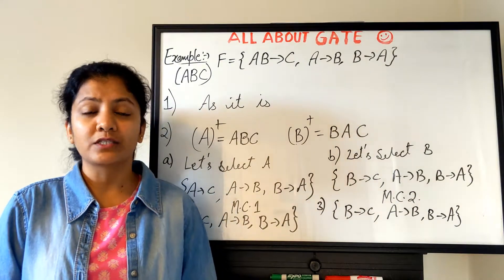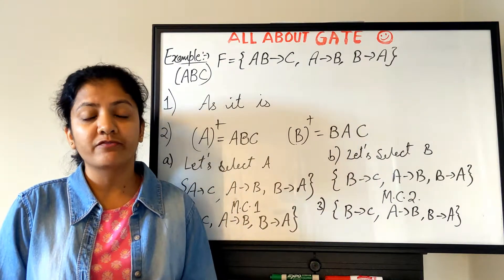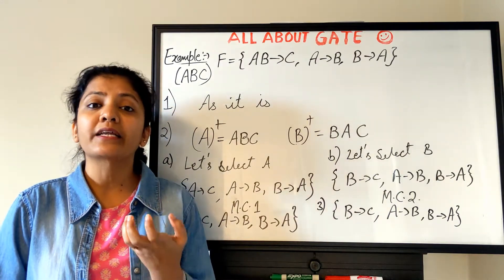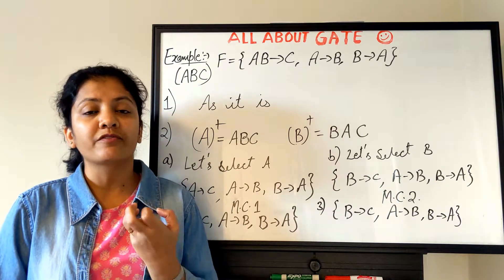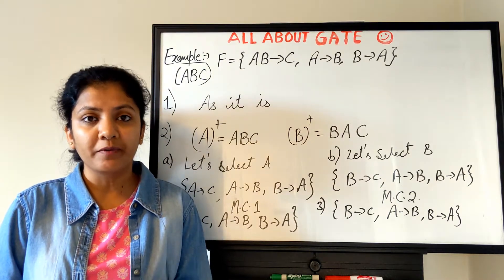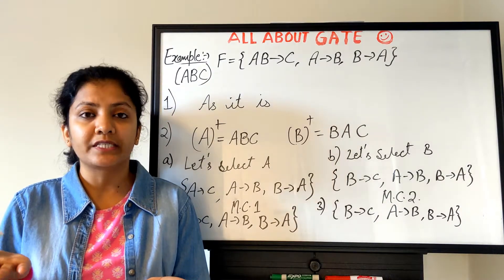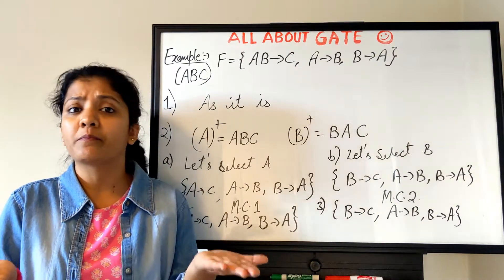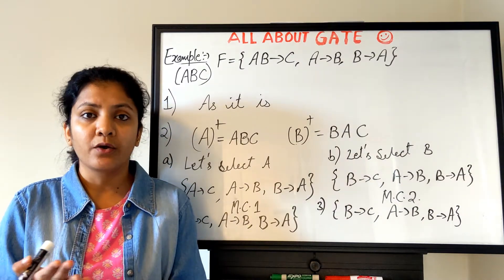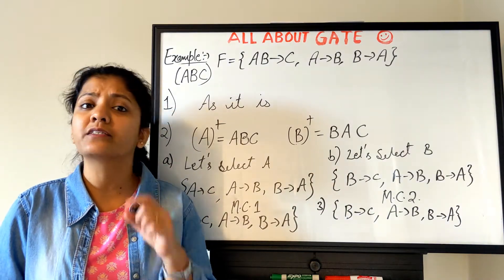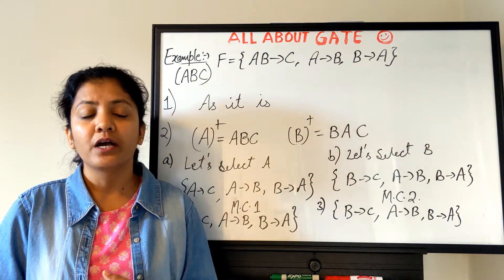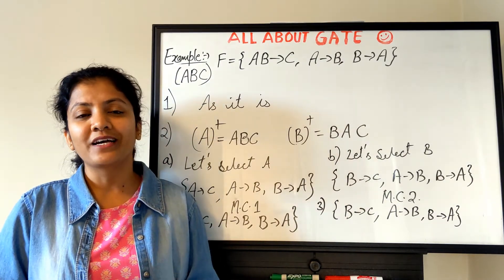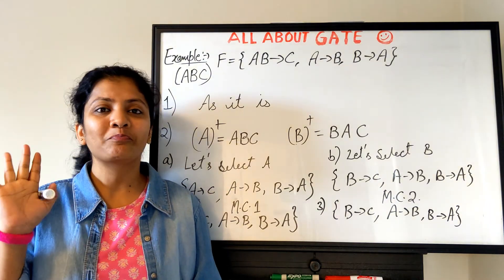I hope it is now very clear how to find the minimal cover for a given FD set, why we need it, and the application of equivalence of a functional dependency set. When you have your minimal cover and your original set F, you can verify that they cover each other and logically imply the same thing. I will see you in the next video with previous year GATE questions based on minimal cover. Stay tuned and please share the video. Bye-bye.